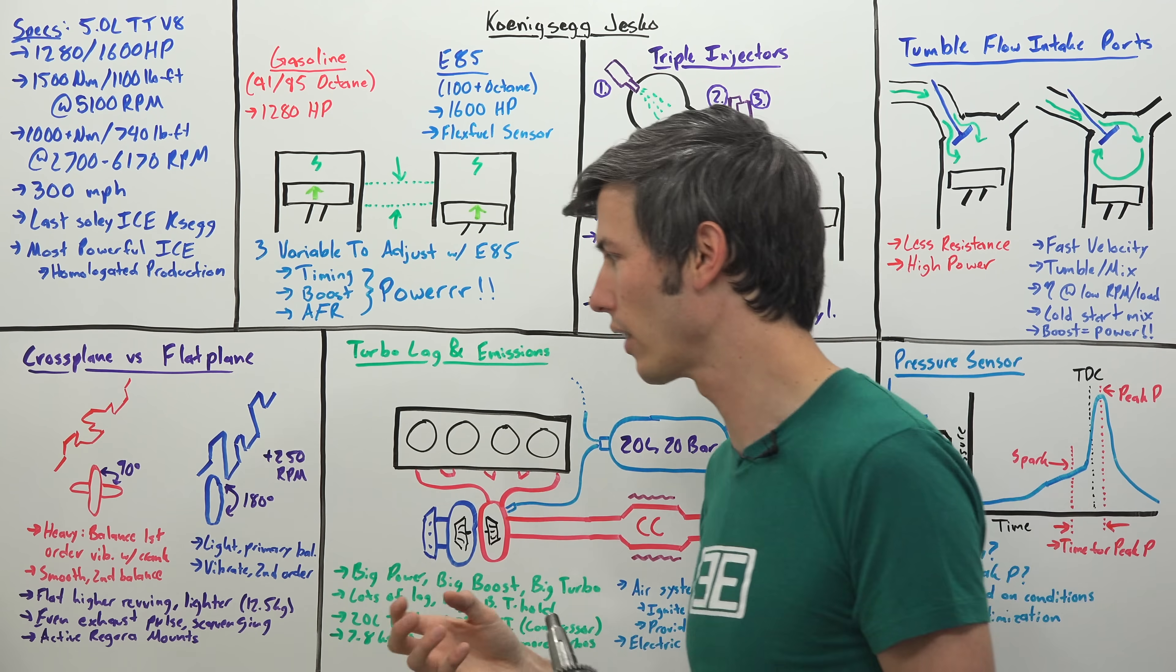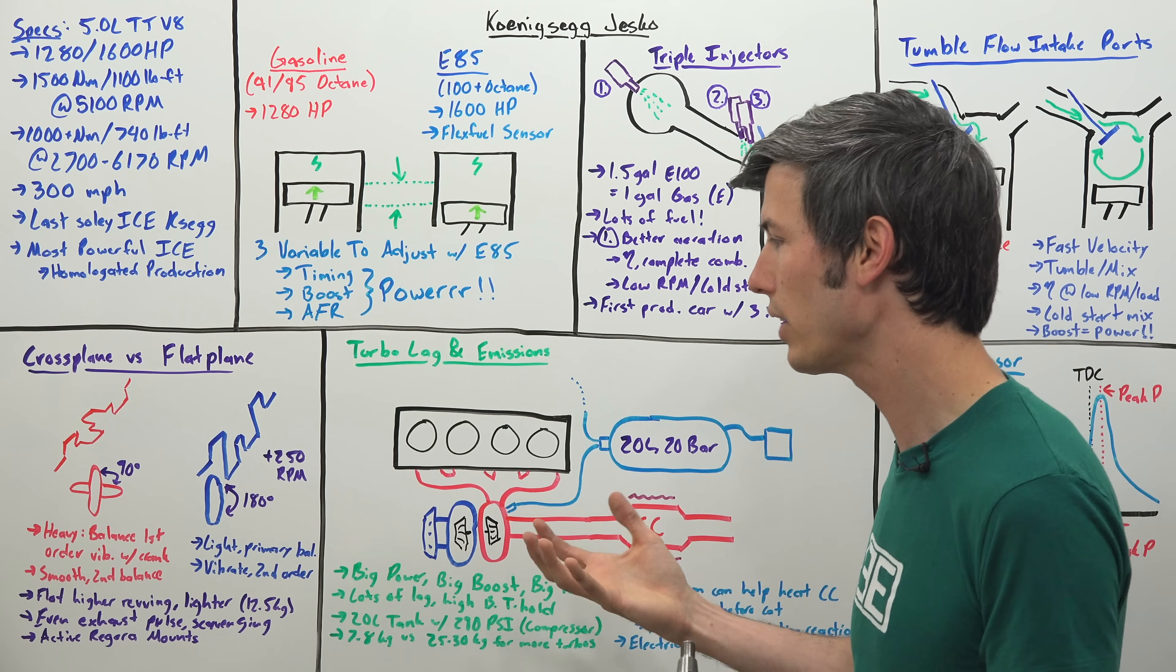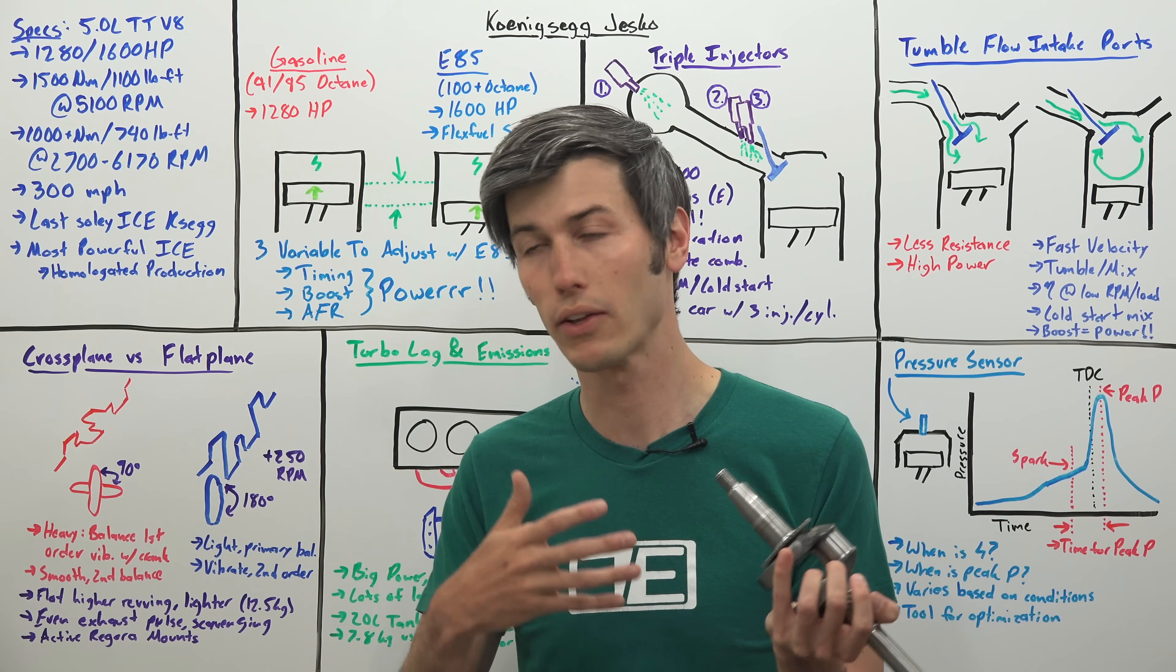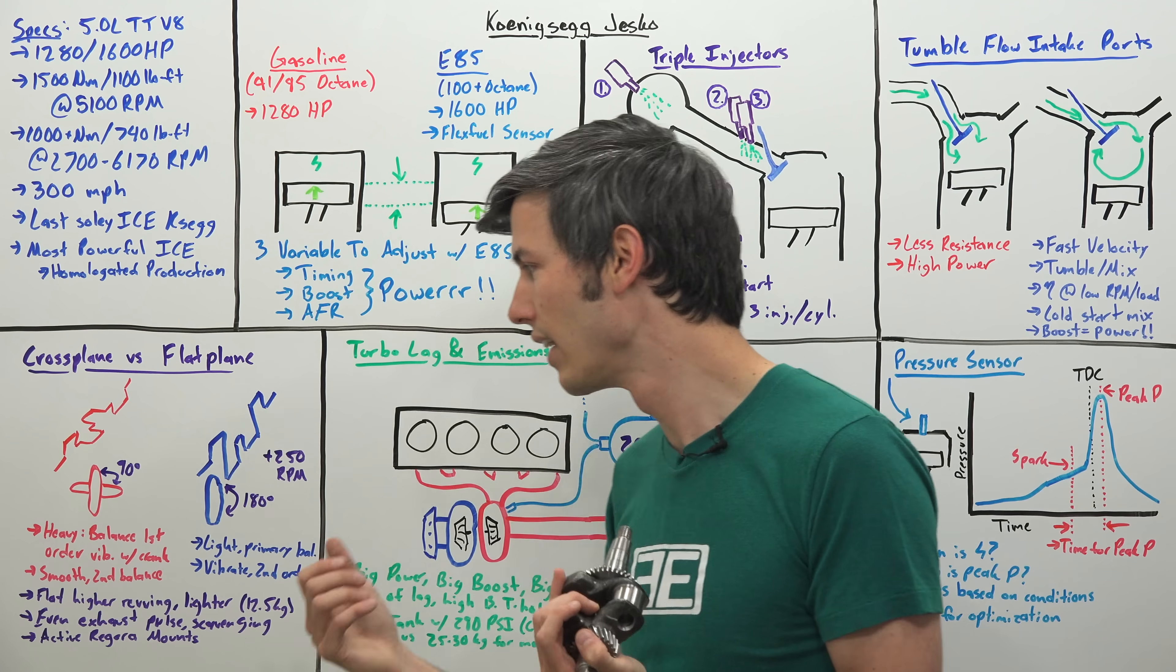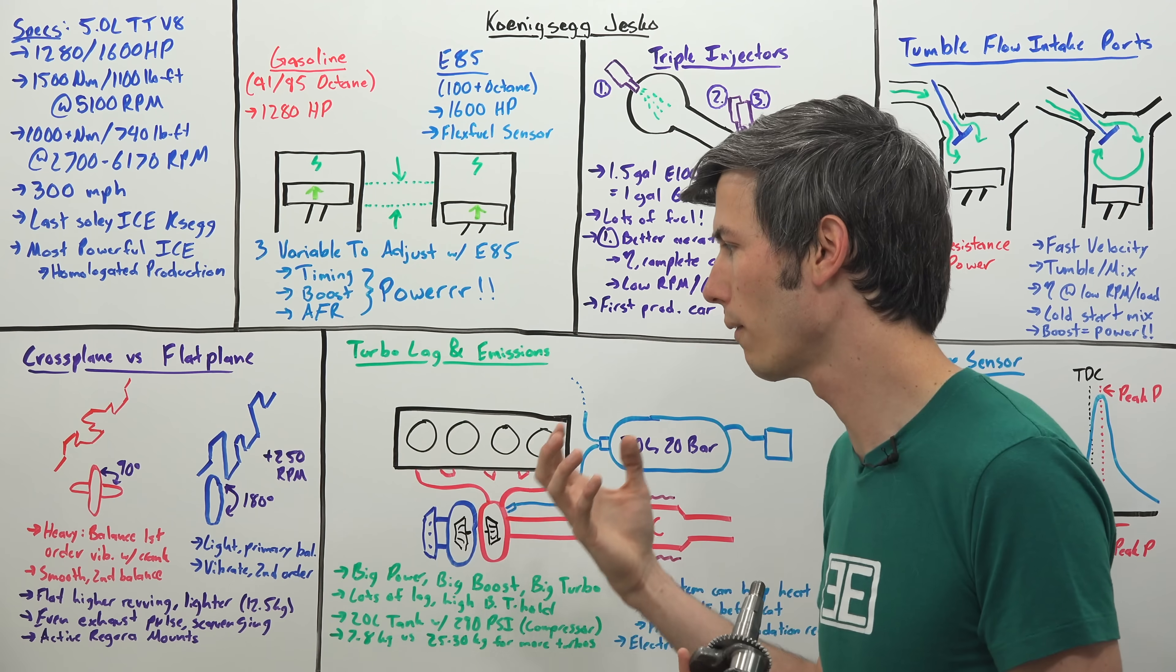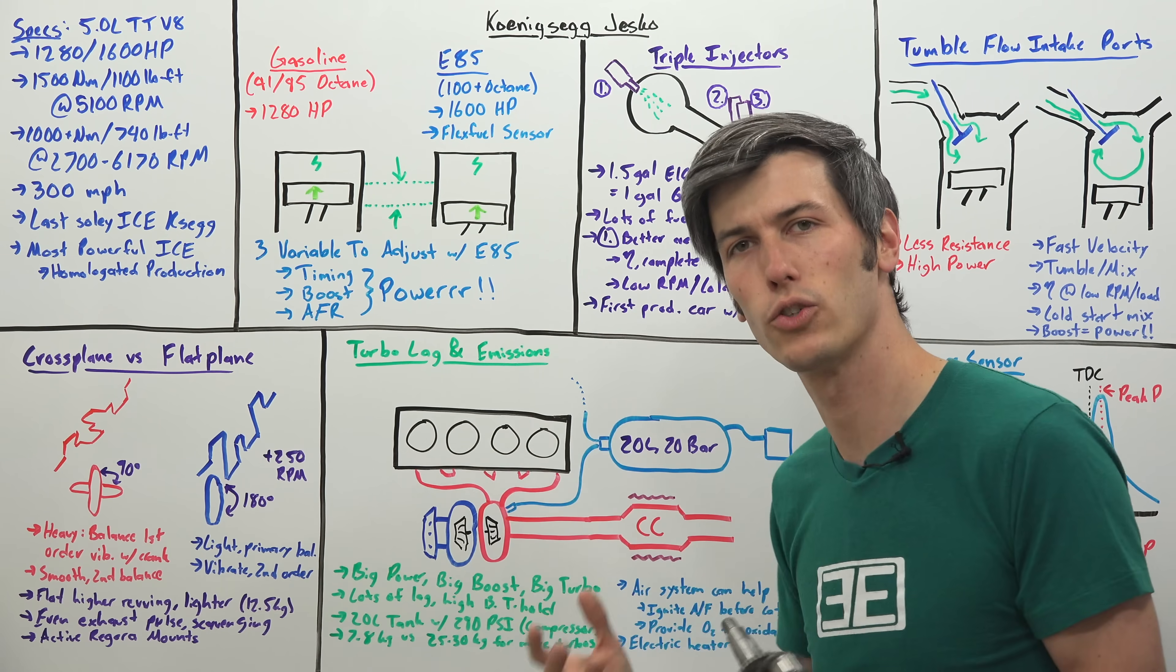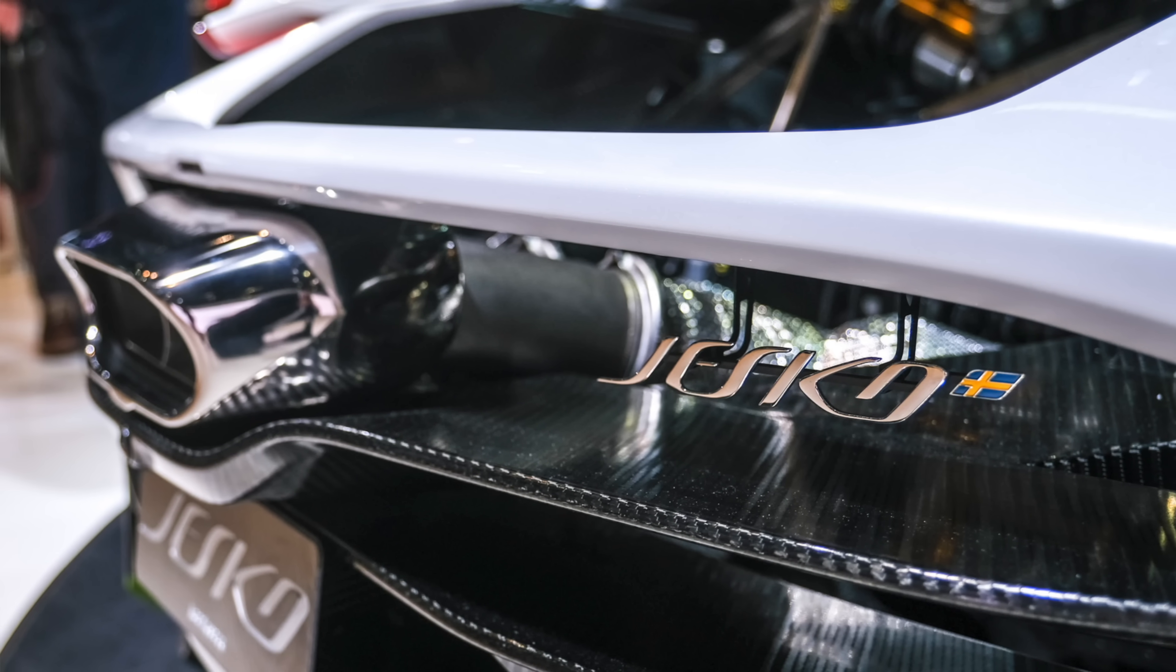One of the reasons they were able to do this and still get away with not annoying the driver with those vibrations is that they have active engine mounts. Those active engine mounts they actually used on the Regera, they did not on the Agera RS. So when switching over to this engine, they are able to tolerate a bit more vibration with those active engine mounts to compensate so that the driver isn't annoyed by the engine vibration.